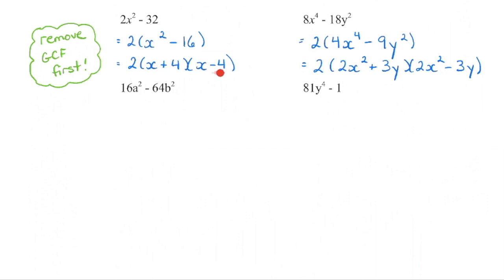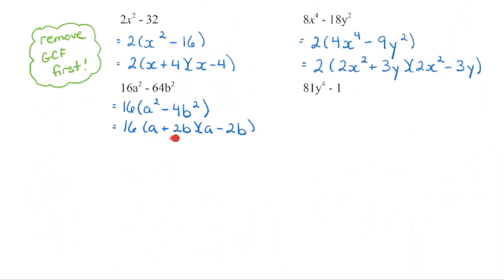In the next example, there is a greatest common factor — take a look at the bracket and ask: can we factor this further? If yes, keep going, then check: can we factor either of those brackets further? No — we're done. We have three factors in this particular polynomial. If you're going to foil it back, foil the conjugates first, then distribute the GCF in to make sure you factored correctly.